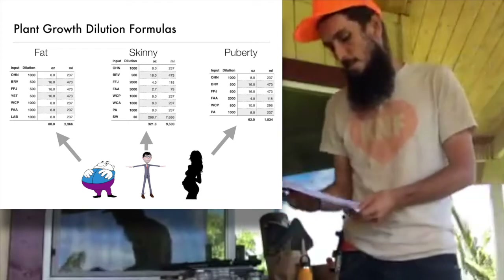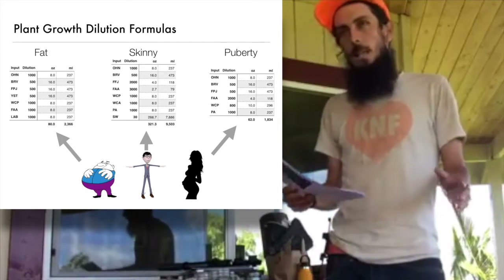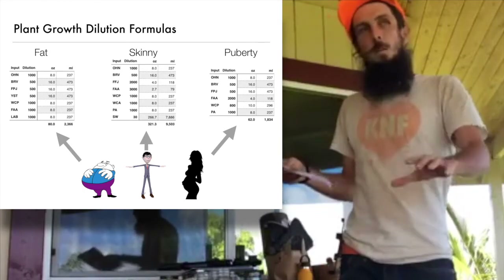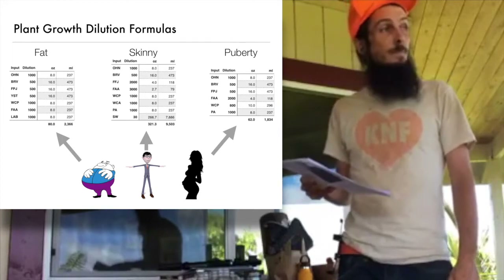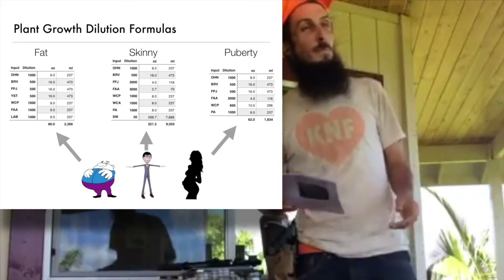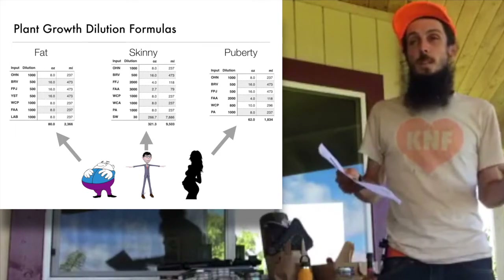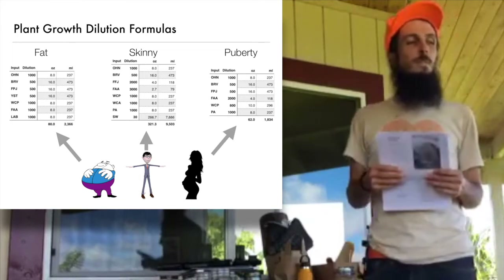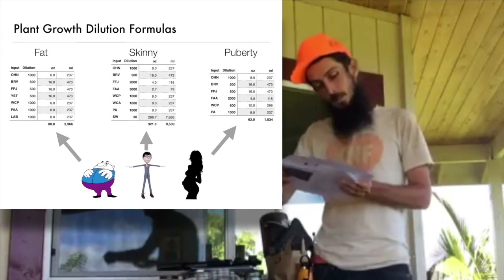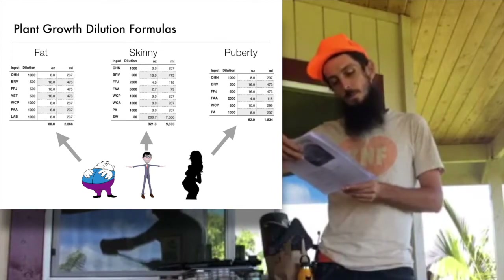These three formulas — fat, skinny, and puberty — are fairly similar to each other, but what they focus on is different. In the early beginnings there's a fat-skinny-fat-skinny cycle, but the beginning is a bit more fat. The formulas are fairly similar in that they all have food, medicine, and cleanser components, and then go into other things like calcium phosphate, fuel.